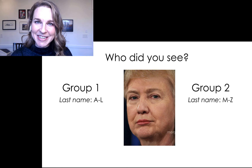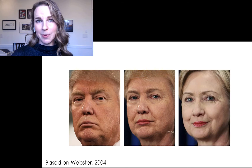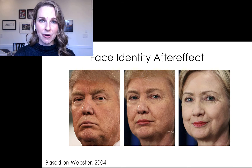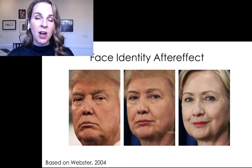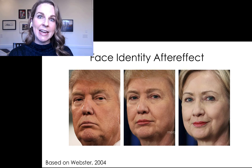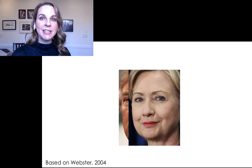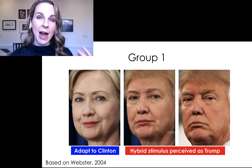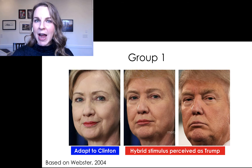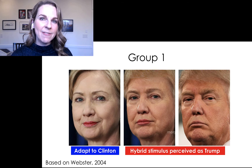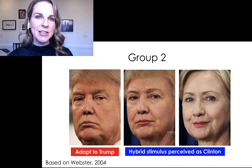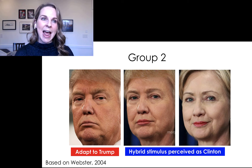Who is this person? Well, this is the Donald Trump, Hillary Clinton love child — Hillary Trump, Donald Clinton. This face is a perfect 50-50 morphed hybrid of these two images. What we've just experienced here as a group is what's called a face identity aftereffect. This is when adapting to a specific face causes you to perceive an average or hybrid face in terms of its opposite. We adapted group one to Hillary Clinton's face so that when you saw the hybrid, your brain subtracted out the Hillary Clinton-ness, leaving you with only Donald Trump. Group two, we adapted you to Donald Trump's face so that you then perceived the hybrid stimulus as Hillary Clinton.